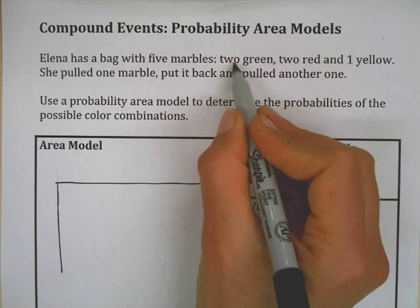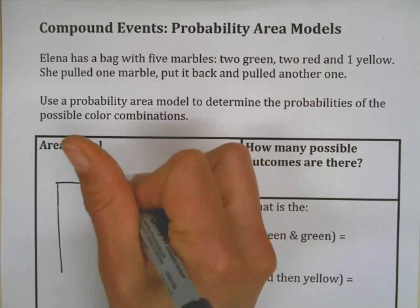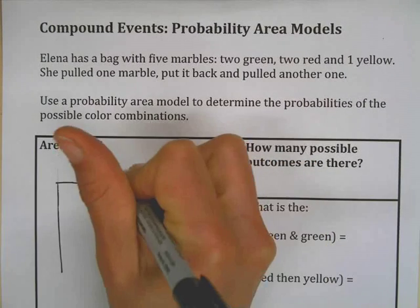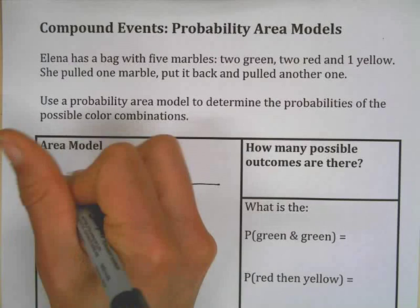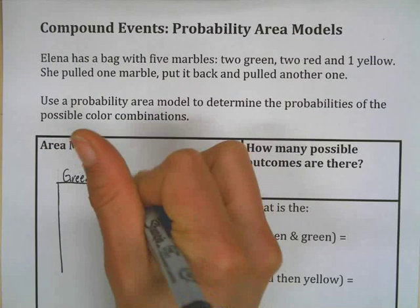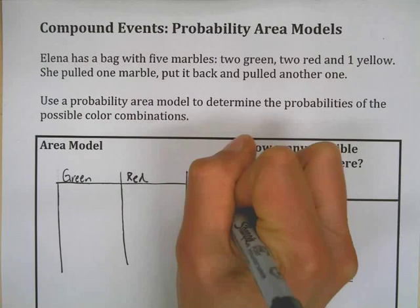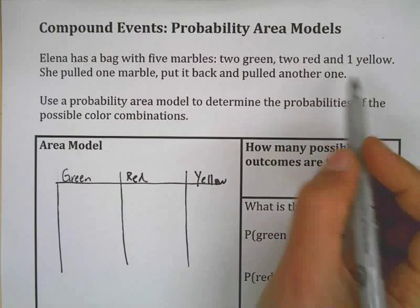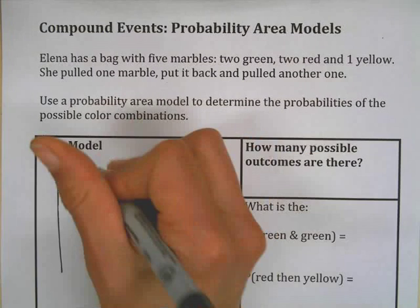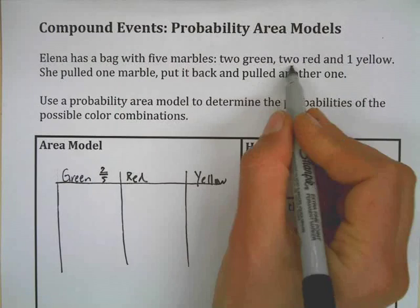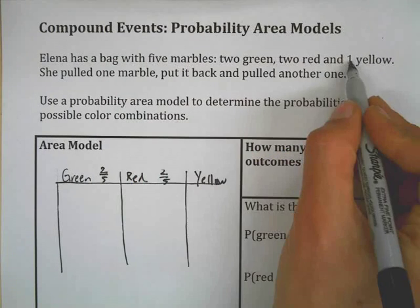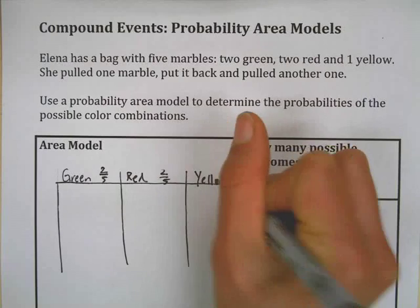Some people like to set it up because there's two, two, and one. Some people might set it up so that the probabilities are somewhat proportionally represented. Then you can write the probability of each. So once again, there's five marbles, two of the five are green, so I can write two-fifths. Two of the five are red, two-fifths, and one-fifth are yellow.